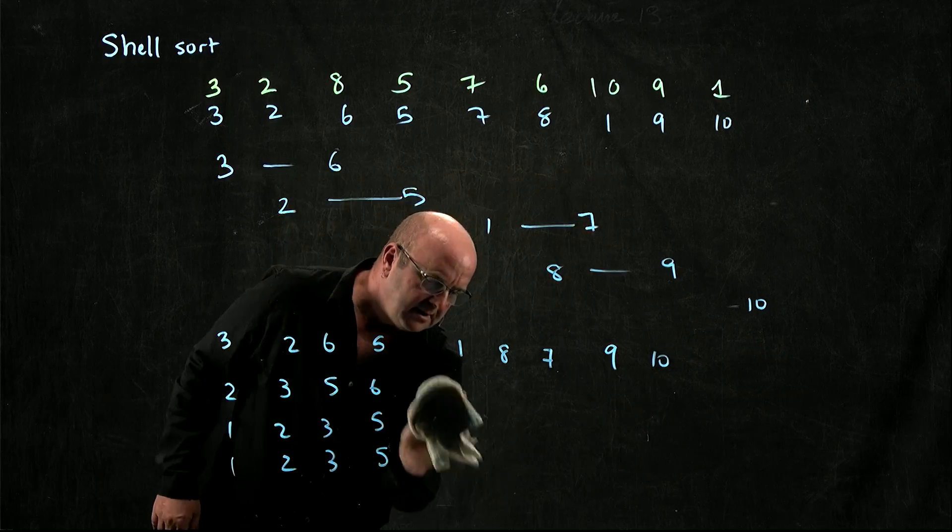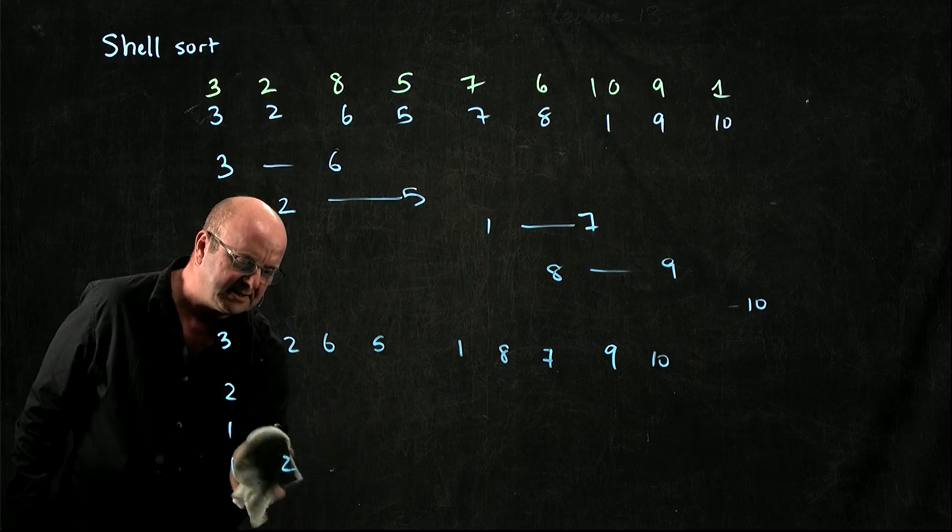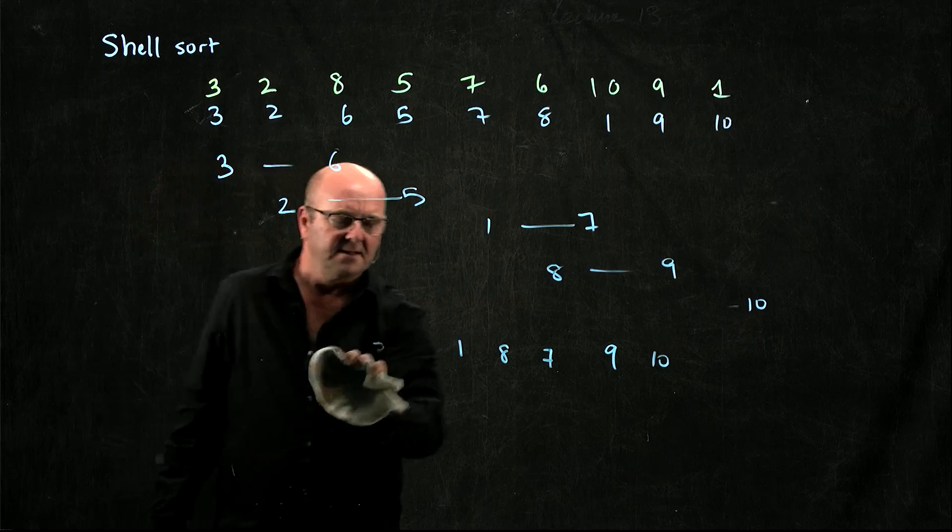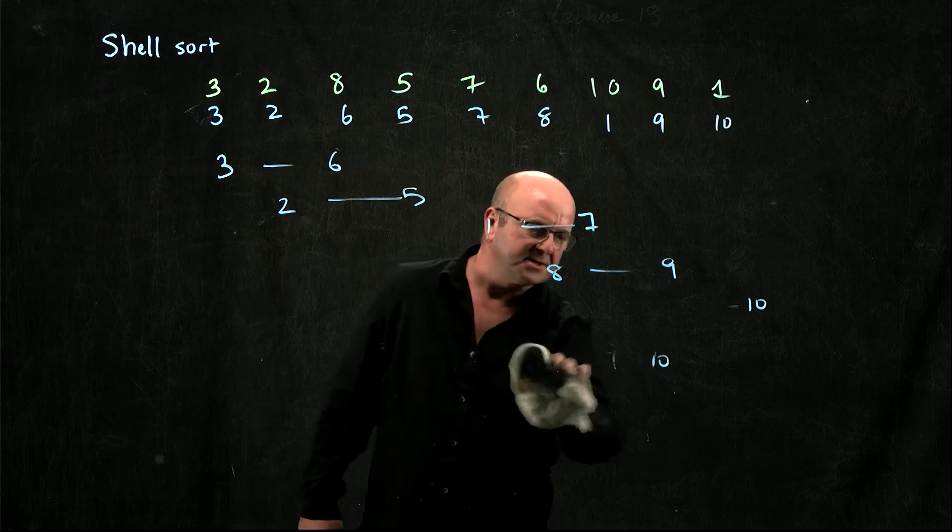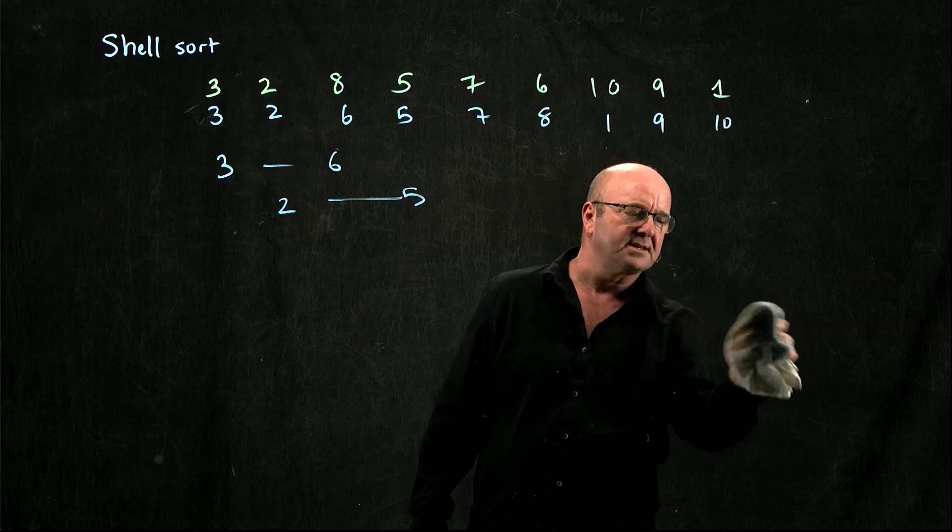So the shell sort is an interesting sorting algorithm. So in the worst case, the shell sort is basically an insertion sort. So it approaches big O of n-squared complexity.